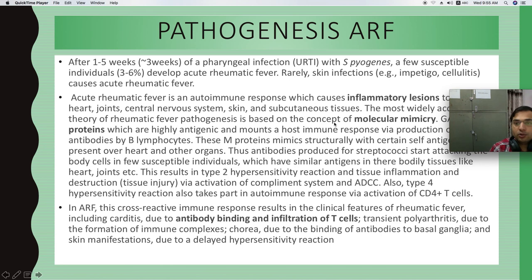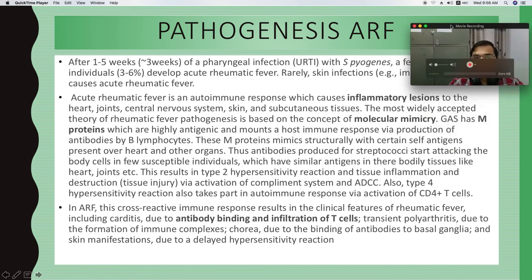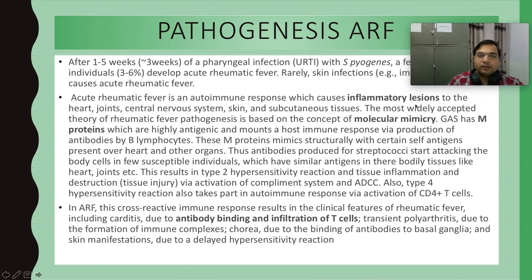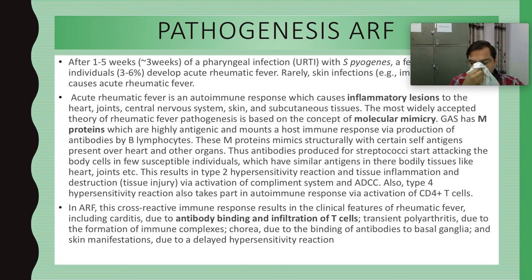Streptococcus pyogenes also infects other body parts such as the skin, but skin infections like impetigo or cellulitis with Streptococcus pyogenes rarely lead to acute rheumatic fever. The inflammatory lesion in acute rheumatic fever affects the heart, joints, central nervous system, skin, and subcutaneous tissue.